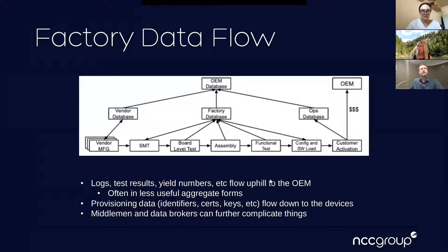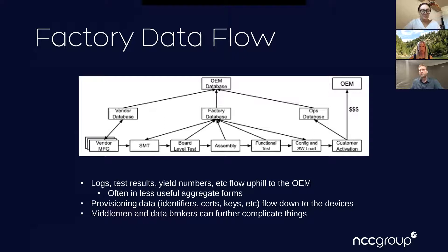On top of that, there's a data flow. Coming down from the OEM: firmware images, serial numbers, certificates — assets that get programmed into devices. Flowing upward: logs, yield numbers. Suppliers often don't want to give you detailed yield information because you could use it to negotiate prices, so they keep it closely guarded. The provisioning data flowing downhill is especially sensitive — if you're provisioning certificates on your devices, that data could be used for counterfeiting, so protecting it throughout the process is critical.